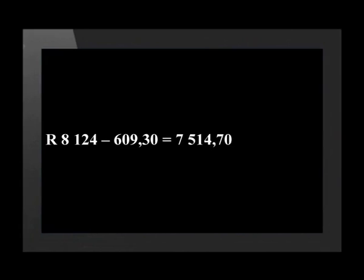Taxes are always calculated on the gross salary. Some deductions are not taxable, which means they're excluded from the income received when calculating the tax payable. In Michael's case, his pension contribution is not taxable, so before we calculate his tax, we need to subtract the pension from his gross salary. Gross salary of 8,124 rand minus 609.30 rand equals 7,514.70 rand. This amount is Michael's taxable income.